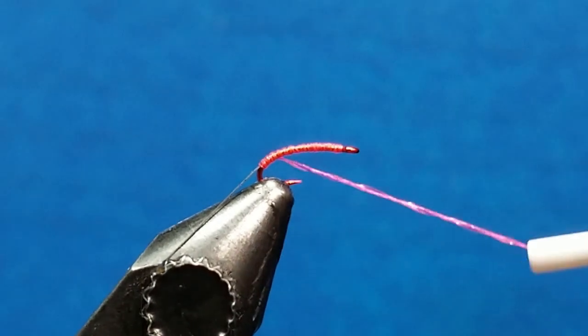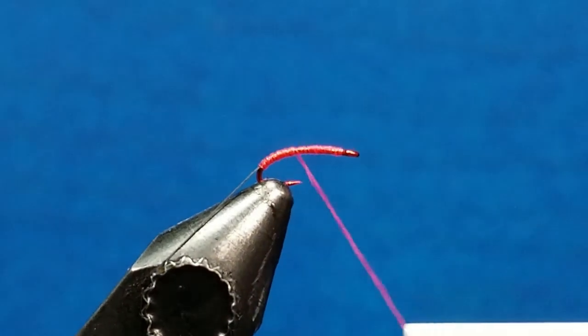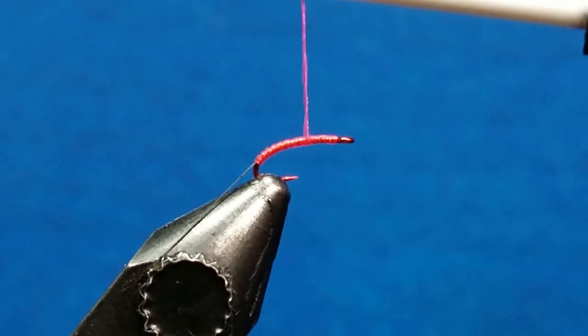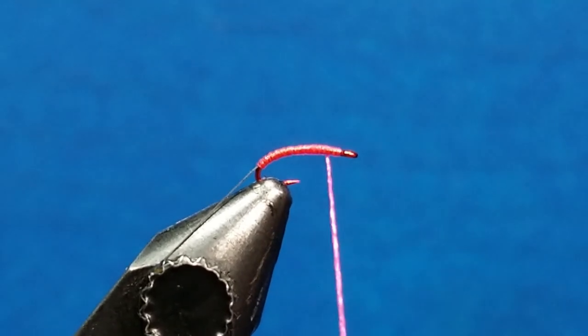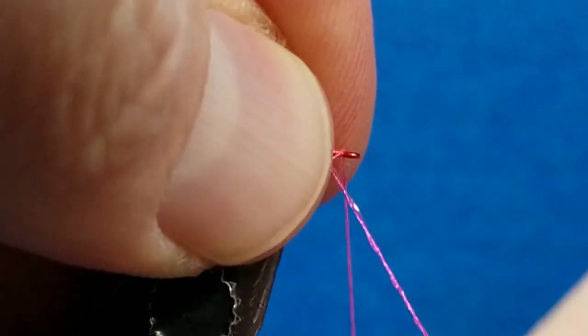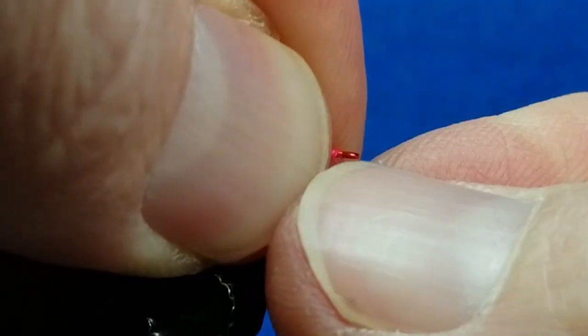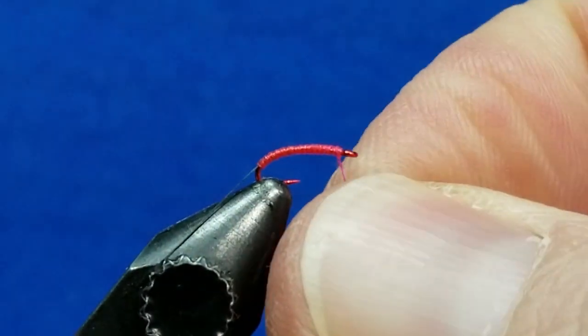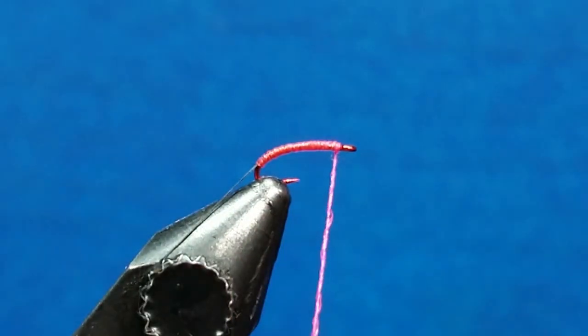I'm going to start to return that body quill to the front, just laying down nice side by side wraps. Once I get to the eye of the hook, I'm going to secure it with just a two turn whip finish, snug that up, give it a nice little tug, and make sure it's tightened down.